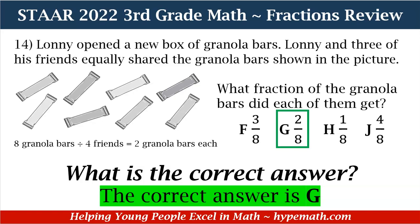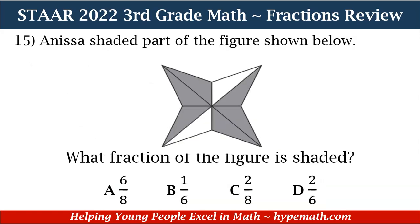So our correct answer is G, two eighths — that is the fraction of the granola bars that each person will get. Great job. Let's move to our next question. Number 15 says: Anissa shaded part of the figure shown below. What fraction of the figure is shaded? Is it A: six eighths, B: one sixth, C: two eighths, or D: two sixths?